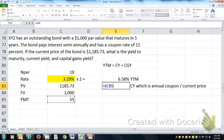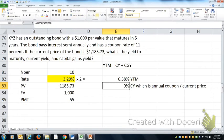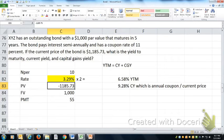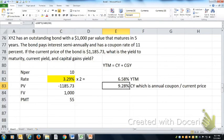You get $55 twice a year, so that's $110, divided by $1,185.73, and that's a really high cash flow yield. That's why this bond is selling at a premium. Its cash flow yield is really high.